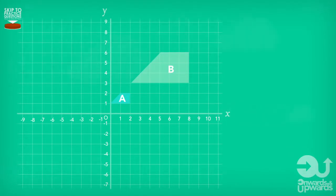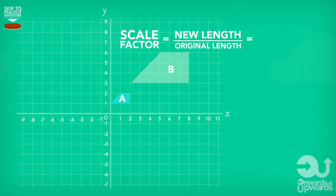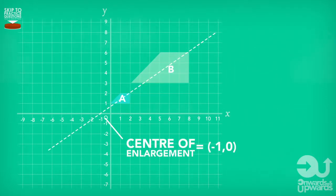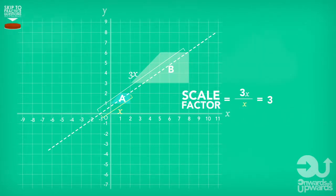What if we wanted to find out what our scale factor was, in a question where we weren't given it? All we need to do is divide one of the new lengths by the corresponding length on our original shape. So in this example, it will be six divided by two, which gives us a scale factor of three. Remember, the scale factor is the new length divided by the corresponding original length. The scale factor can also be found from the lines drawn to the center of enlargement — divide the length from the corner of the enlarged shape to the center by the corresponding length from the original shape's corner to the center.